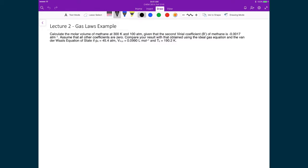Assume that all other coefficients are zero. Let's compare this result to that obtained using the ideal gas law and the van der Waal equation of state. If the critical pressure is 45.4 atm, the critical volume is 0.0990 liters per mole, and the critical temperature is 190.2 Kelvin.